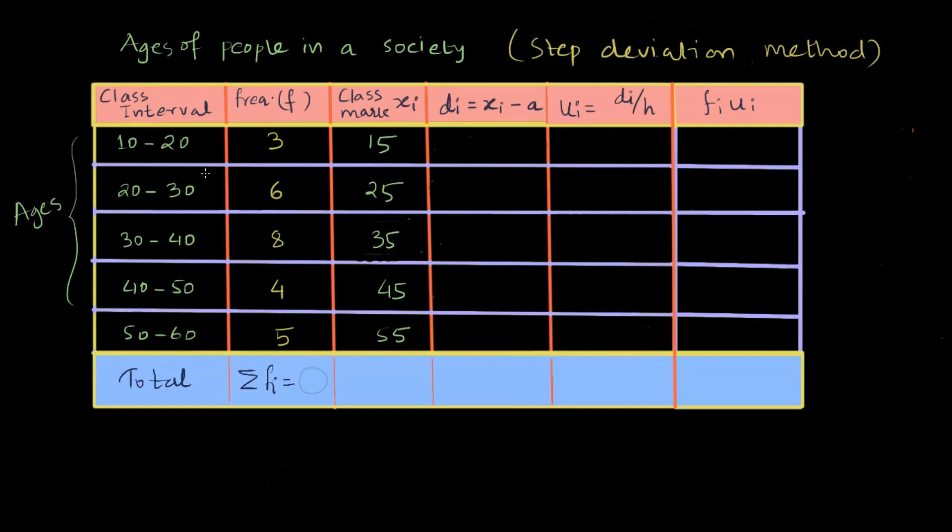So ages 10 to 20, 20 to 30 and so on. The frequency shows the number of people with ages in the corresponding class interval. For example, if 40 to 50 has frequency four, that means there are four people who have ages between 40 to 50.